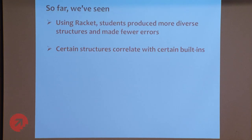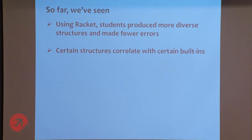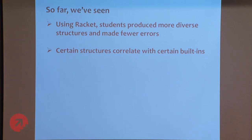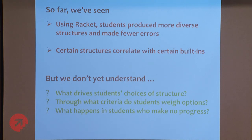We don't know at this point which one is driving what students are doing. We just know this is the pattern we're seeing. So far we've seen that when students were in Racket and functional programming, they produced more diverse solutions and made fewer errors than in historical studies. We see that certain program structures are correlating with the use of certain built-ins. What we don't know: what's driving the choices of structure, what criteria students are using to decide which structure to use, and what's going on with the students who make no progress.